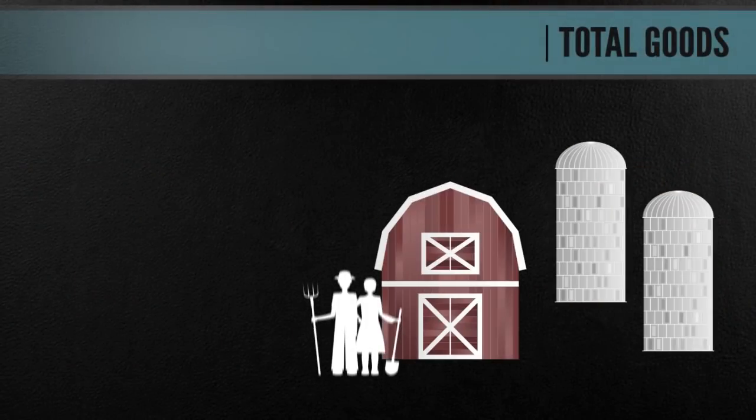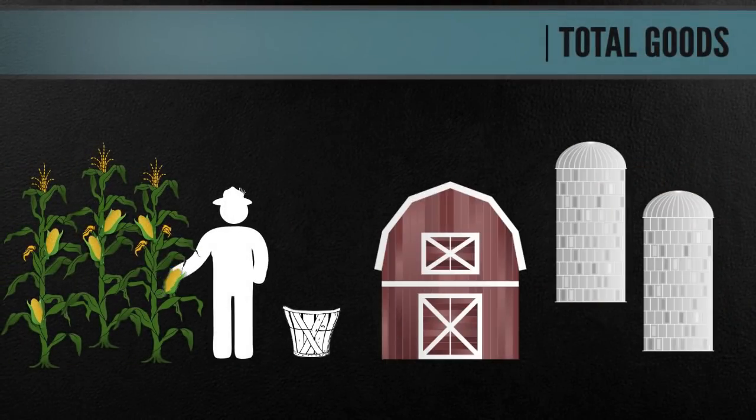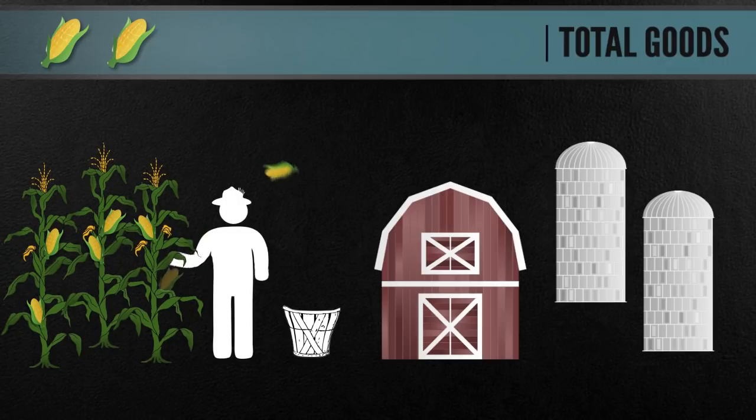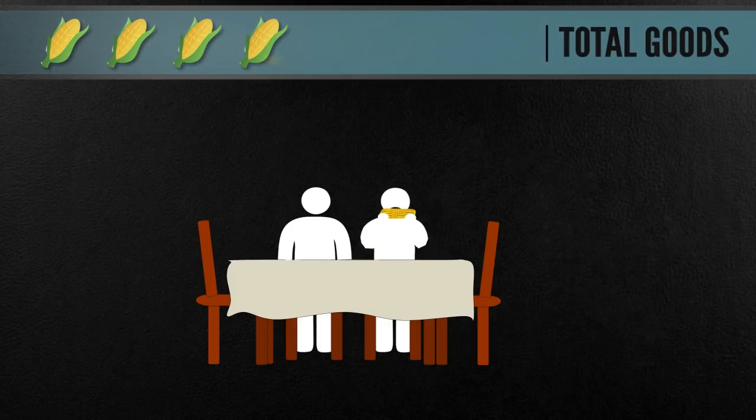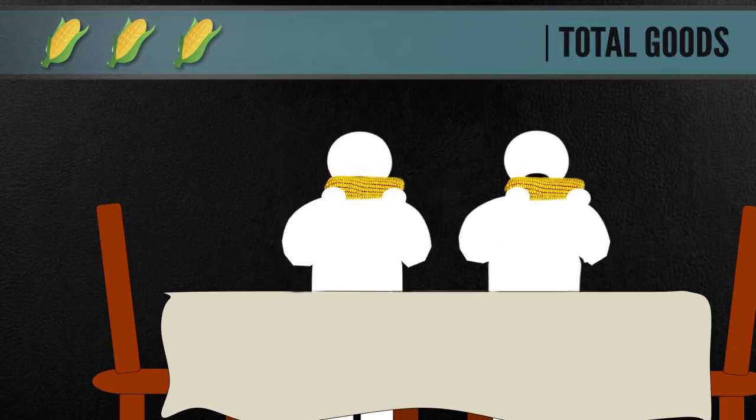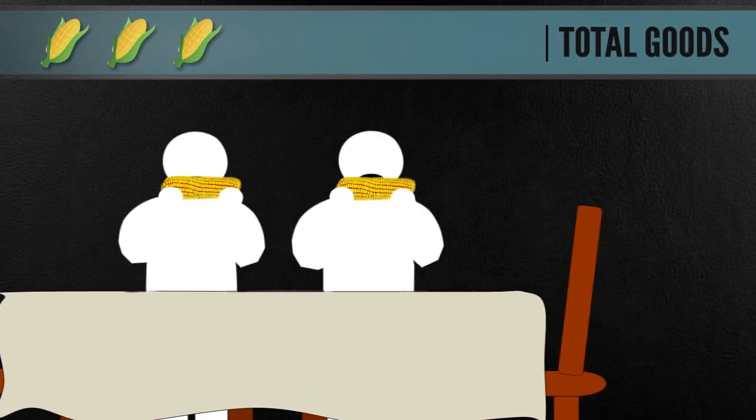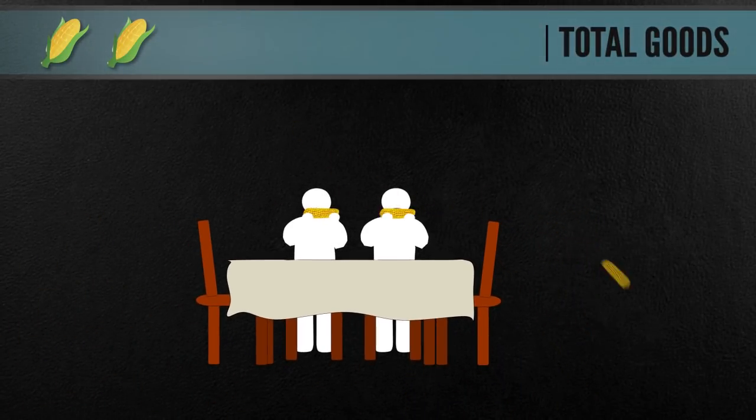Let's look at a family farm. How much food they produce depends on how much they work. When they work, their total amount of food increases. When they eat, their total amount of food shrinks. This consumption isn't a bad thing. It's really the whole point of working in the first place.